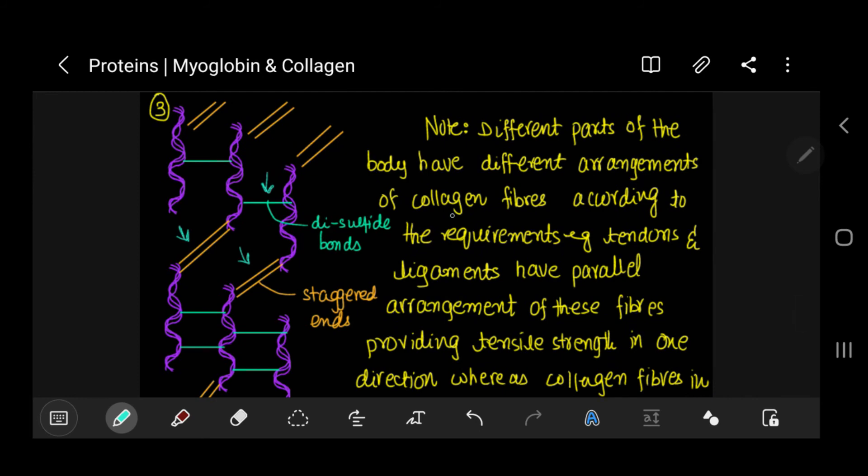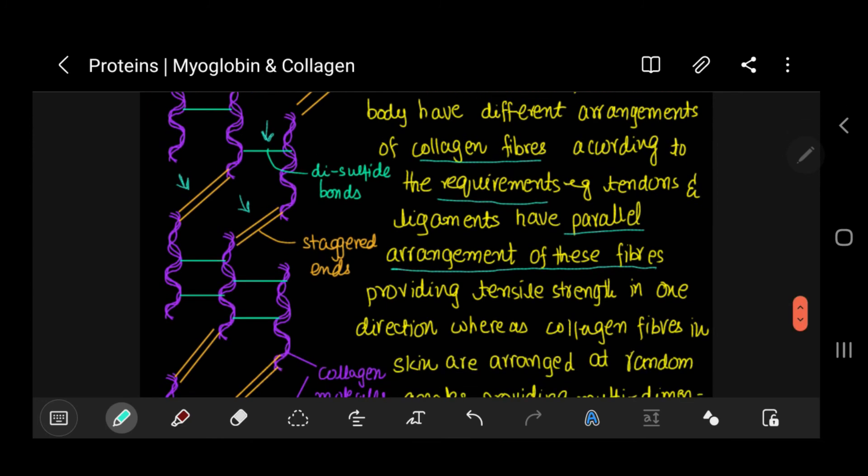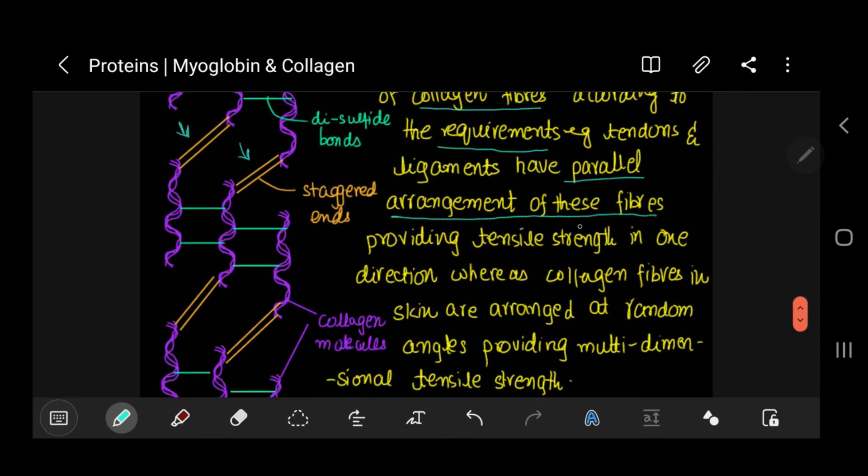Different parts of the body have different arrangements of collagen fibers according to the requirements. For example, tendons and ligaments have parallel arrangement of these fibers, this provides tensile strength in one direction. Whereas collagen fibers in skin are arranged at random angles to provide multi-dimensional tensile strength.